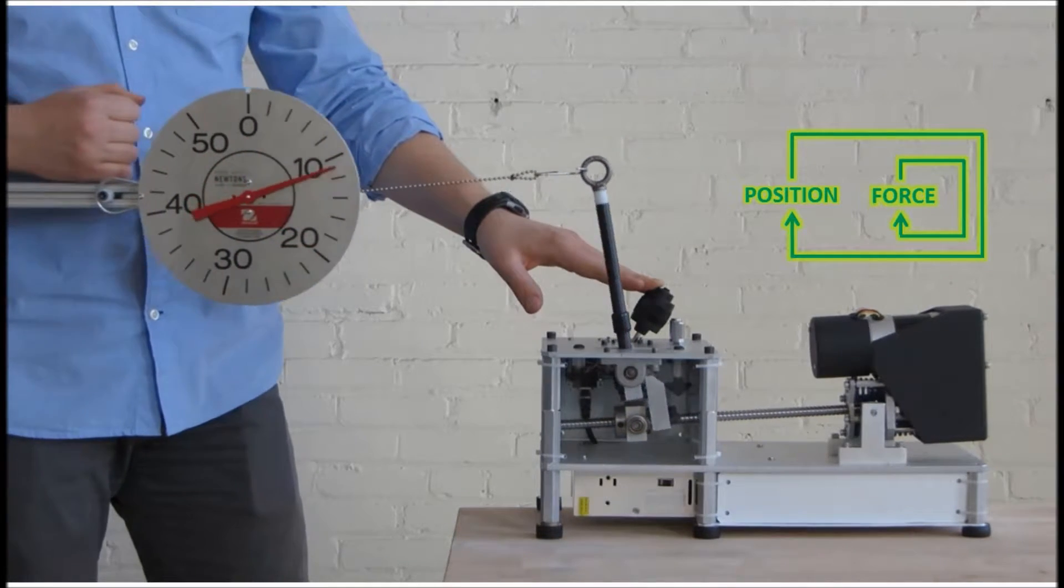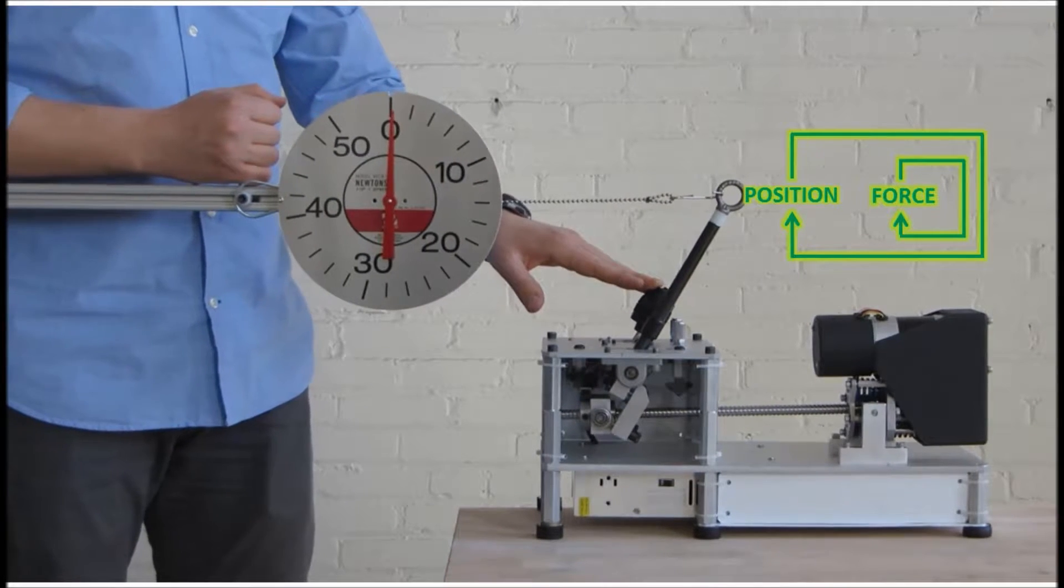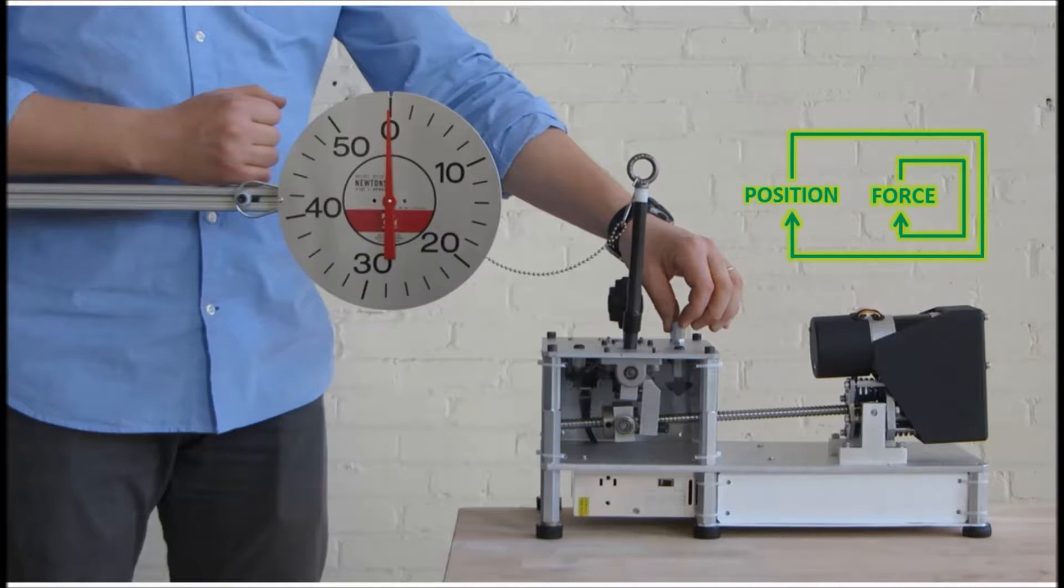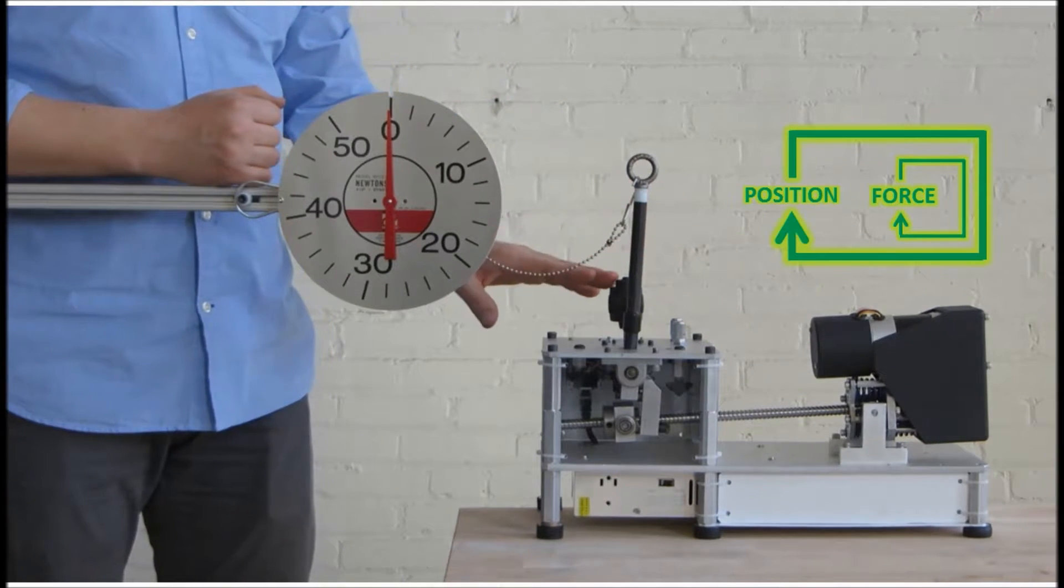Effectively, impedance control creates a virtual spring. The stiffness of this virtual spring can be adjusted by simply changing the gain of the outer position feedback loop.